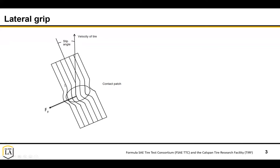After it loses contact with the ground, it'll snap back and go straight again. The more you rotate this tire sideways, the more deformation of the tire you get. The tire acts like a spring - just like in the longitudinal case - and this deformation will result in a lateral force.